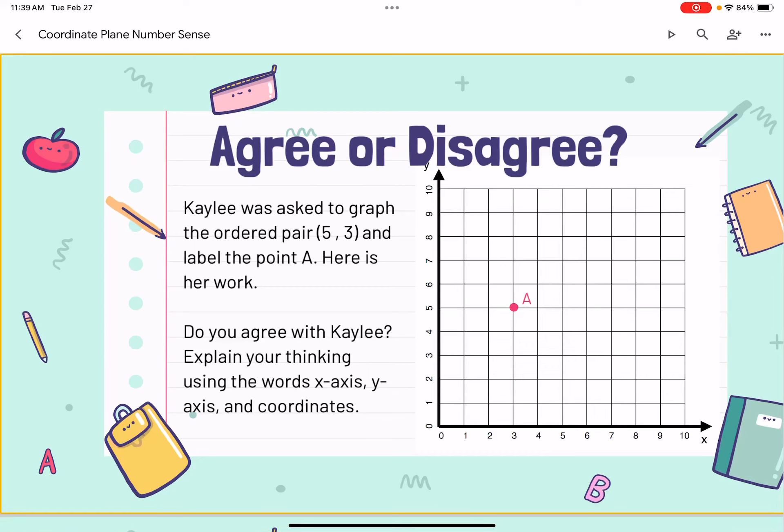Welcome to Number Sense. Do you agree or disagree? Kaylee was asked to graph the ordered pair 5, 3 and label that point A. Here is her work.